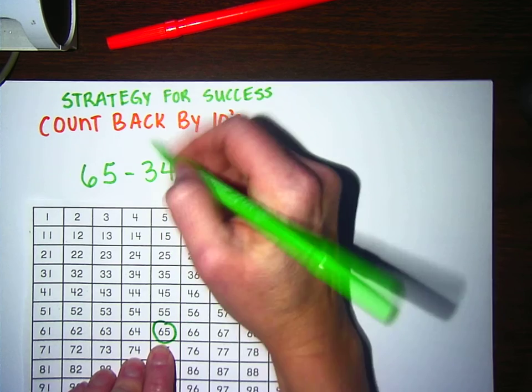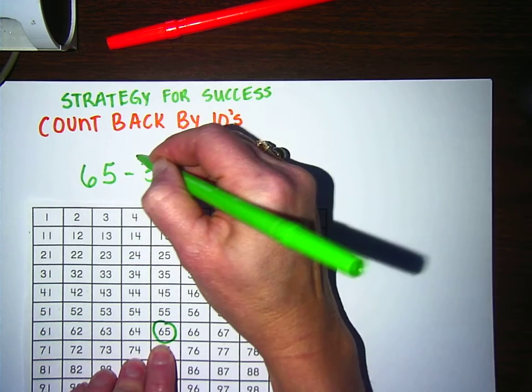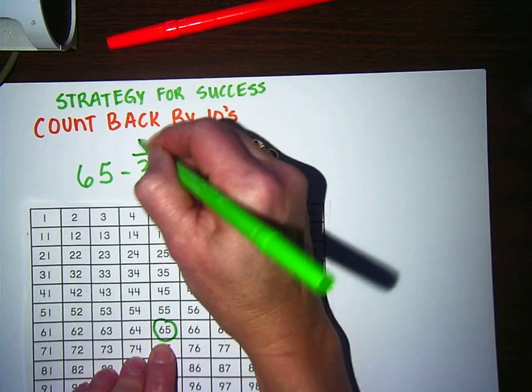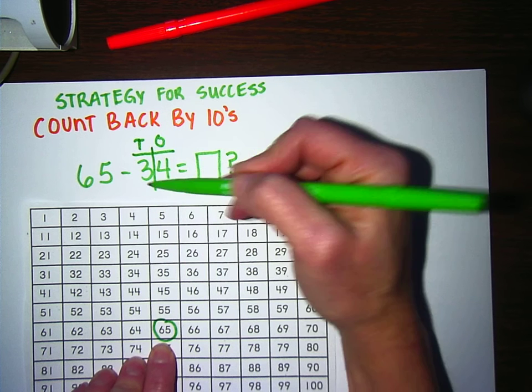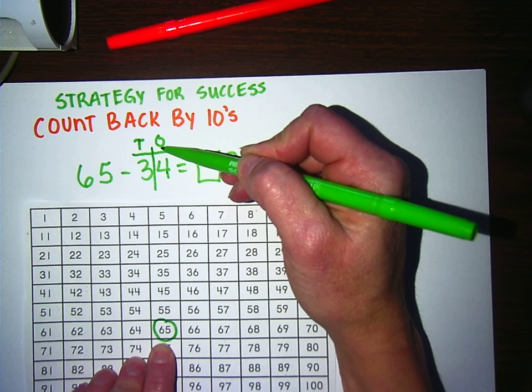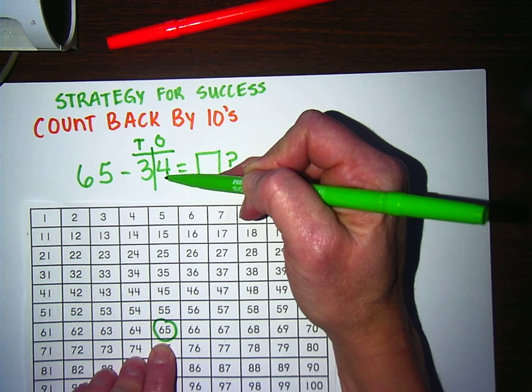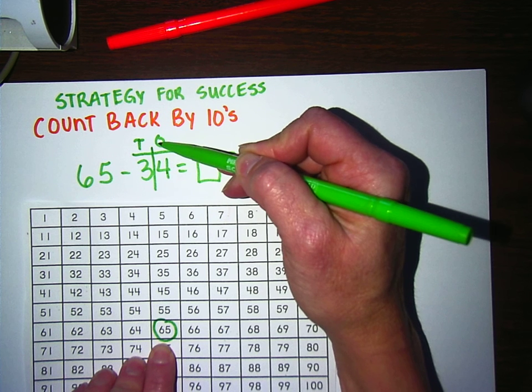And then I'm going to back up 34 spaces. But if I put the number 34 on a place value chart for just a moment and look at it, I can tell that there are three tens and four ones, which means it's going to be three numbers up and then four numbers to the left. So let's try this.